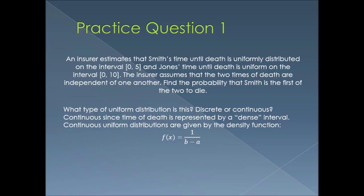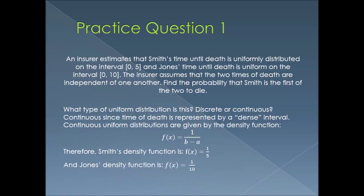Continuous uniform distributions are given by the density function 1 over (B minus A), where B and A represent the endpoints of the interval. For Smith, A is 0 and B is 5, so the density is 1/5. For Jones, it would be 1 over (10 minus 0), which is 1/10.